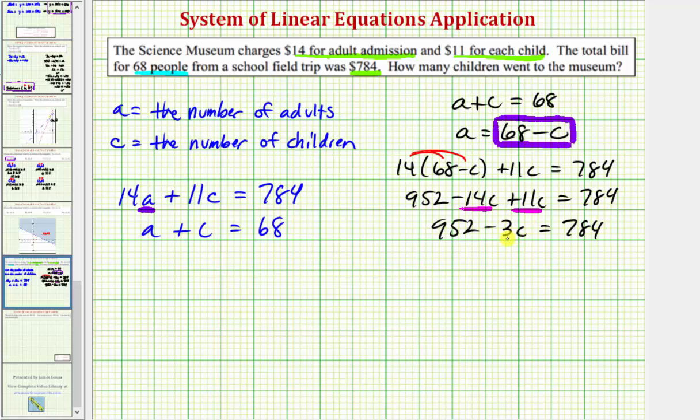Let's isolate the C term by subtracting 952 on both sides. Simplifying here, we have negative 3C equals 784 minus 952, which is equal to negative 168. Dividing both sides by negative 3, we have C equals negative 168 divided by negative 3, which is equal to 56.